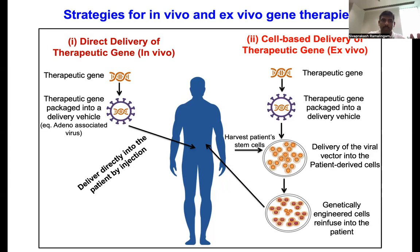In vivo means direct delivery of the viral particles into the patient's organ. The therapeutic gene is packaged into an adeno-associated viral vector and directly delivered into the patient by injection. The advantage of adenovirus is that it has several serotypes, each with specific infectivity. For example, AAV6 can deliver your therapeutic gene mainly into hematopoietic stem cells — that is the major advantage of adeno-associated viral vectors.